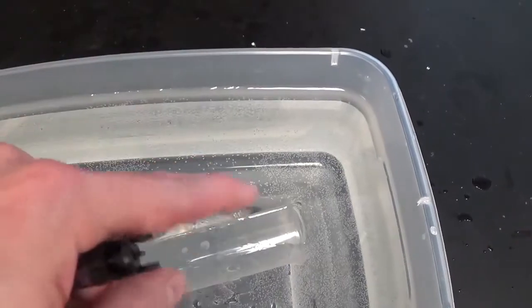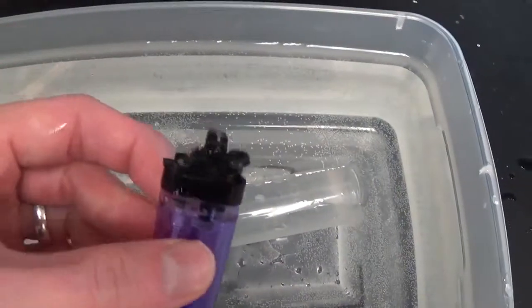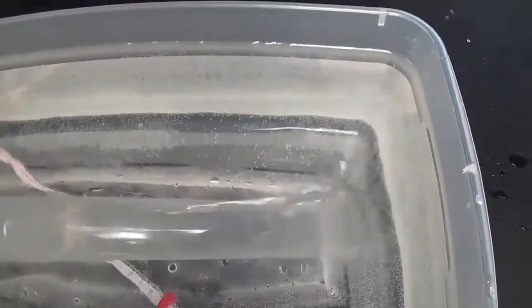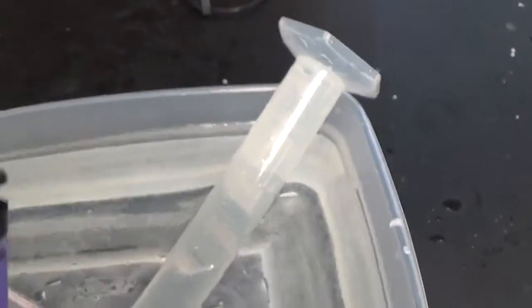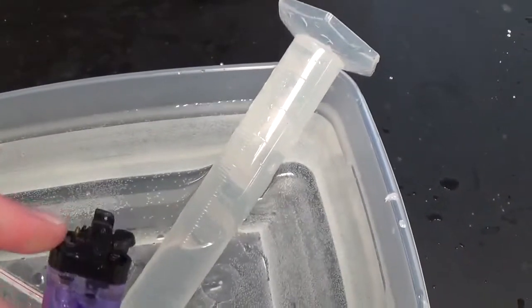Remember the butane is bubbled through water. And when it bubbles through water into the graduated cylinder, the gas that we collect is not just butane. It's also water vapor. So we need to subtract the pressure of the water vapor, which we can look up in a table since we know the temperature.